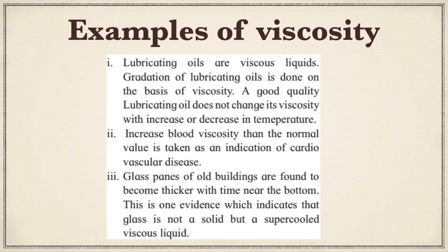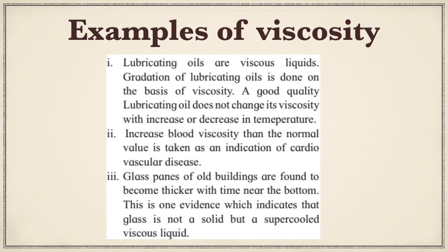Some examples of viscosity: first, lubricating oils are viscous liquids — the grading of lubricating oils is done on the basis of viscosity, and a good lubricating oil is one that does not change its viscosity with increase or decrease in temperature. Second, increased blood viscosity beyond normal is taken as an indication of cardiovascular disease. Third, glass panes of old buildings become thicker near the bottom over time — this is evidence that glass is not a solid but a supercooled viscous liquid. We are now done with the theory part of this chapter.